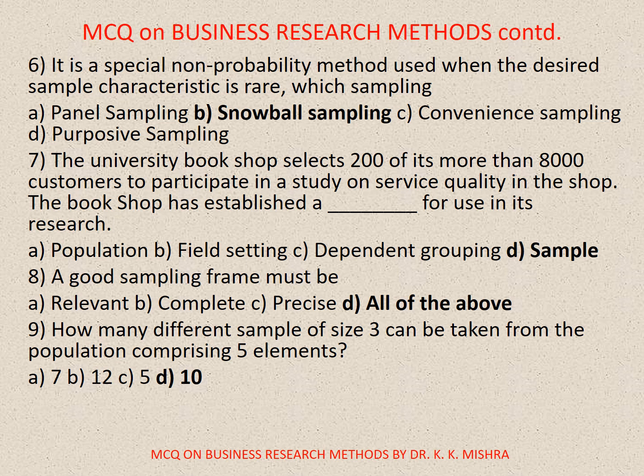Question number 8. A good sampling frame must be. Options are: A. Relevant, B. Complete, C. Precise, D. All of the above. Correct option is D. All of the above. Question number 9. How many different samples of size 3 can be taken from a population comprising 5 elements? The correct option is D. 10.